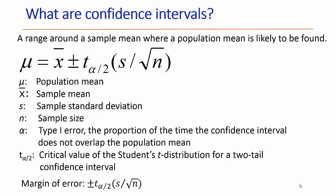This slide shows us what a confidence interval is. It is a range of values around a sample mean where the population mean is likely to be found. This is the equation describing a confidence interval where mu is the population mean, x-bar is the sample mean, s is the sample standard deviation, and n is the sample size.